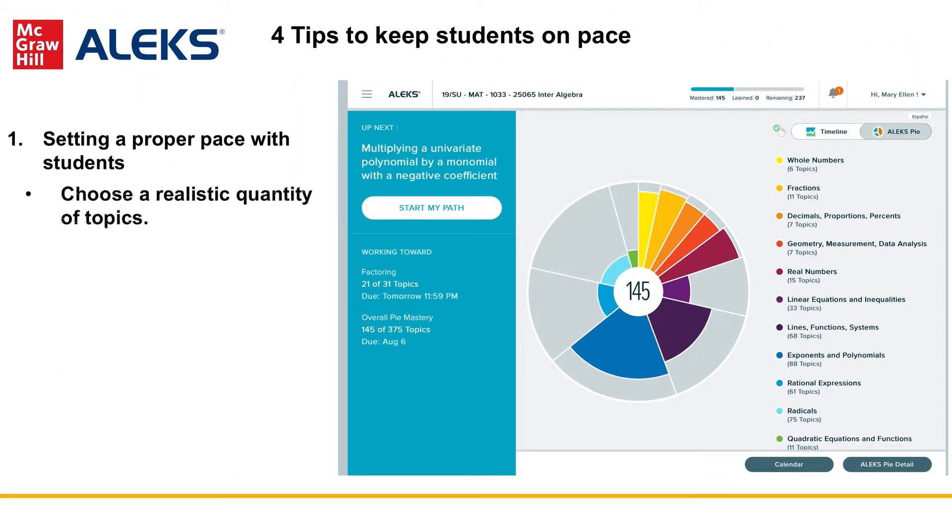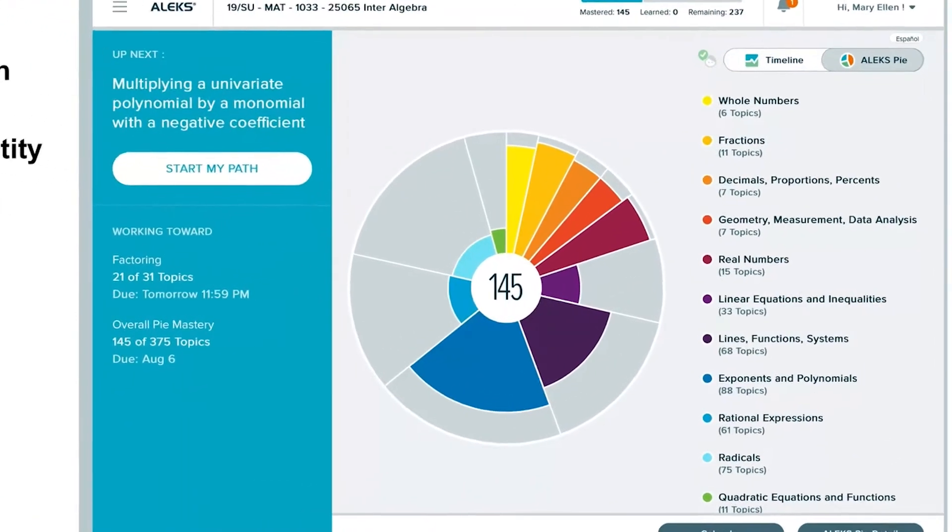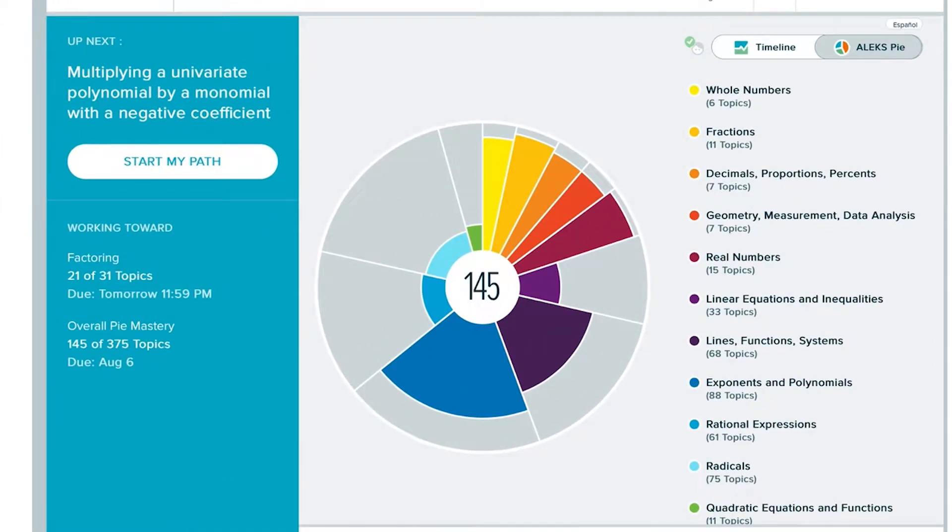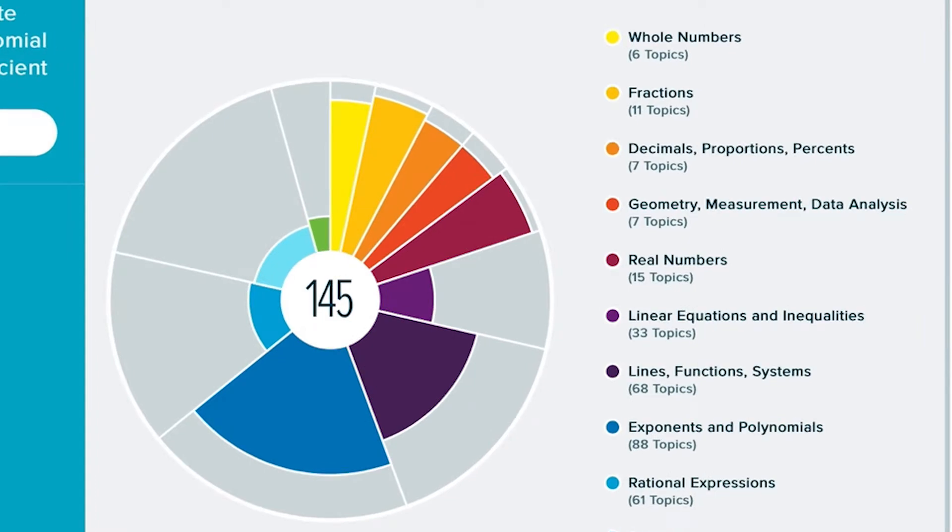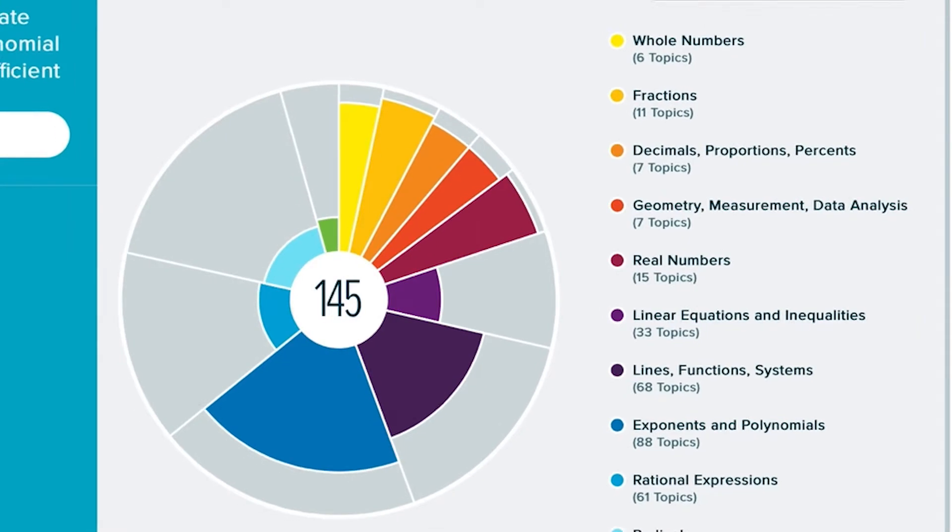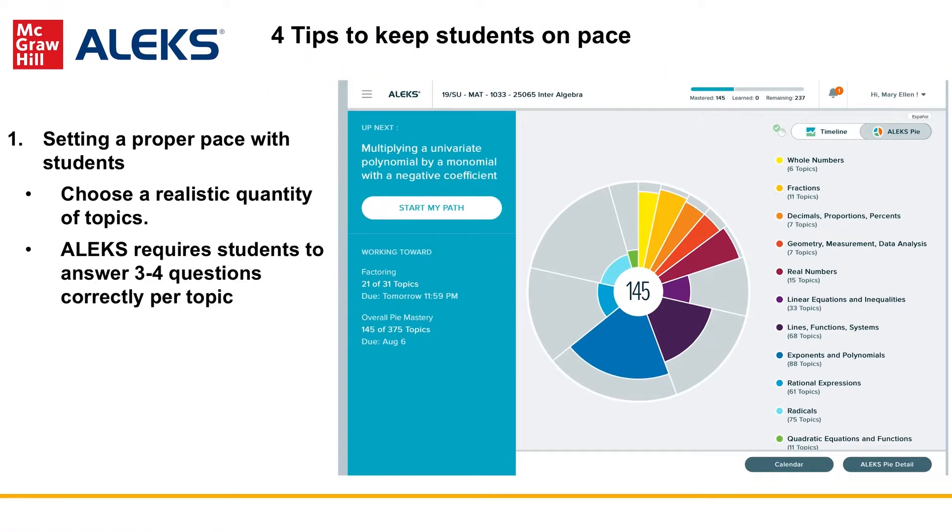It's important to choose a realistic quantity of topics that students are able to successfully complete within your course format. A student might see learning 15 topics in ALEKS as an easy, quick assignment. However, ALEKS requires students to answer three to four questions correctly per topic. 15 topics in ALEKS might actually be working through 60-plus practice problems, so setting realistic goals is important.